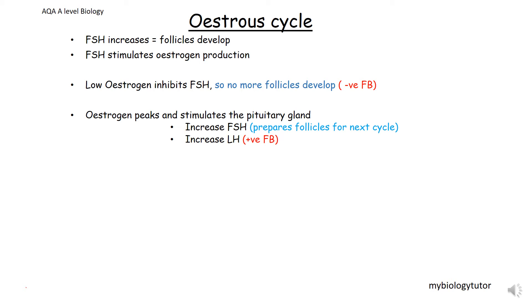So if you have a look on your graphs while I'm going through this, you've got lower oestrogen levels to start off with, and that inhibits the FSH. That's quite important at that point because there are no follicles developing to maturity in the same cycle — there's only one follicle doing it. And then as the oestrogen peaks, that then stimulates the pituitary gland to increase the FSH and also to increase the LH. So that's one of the few examples of positive feedback.